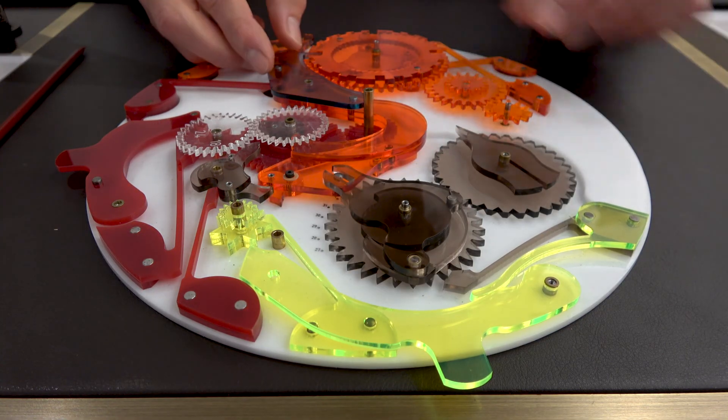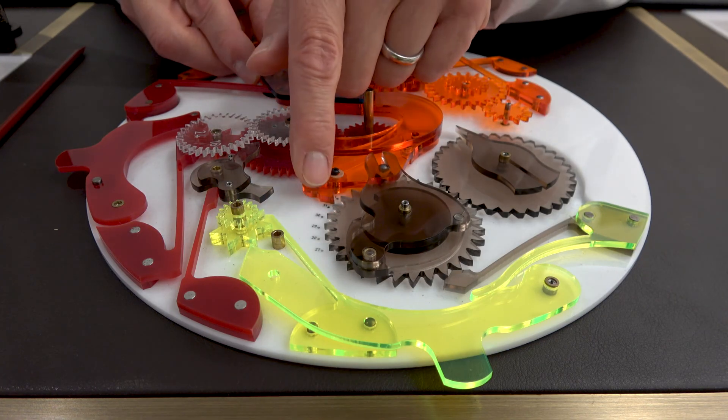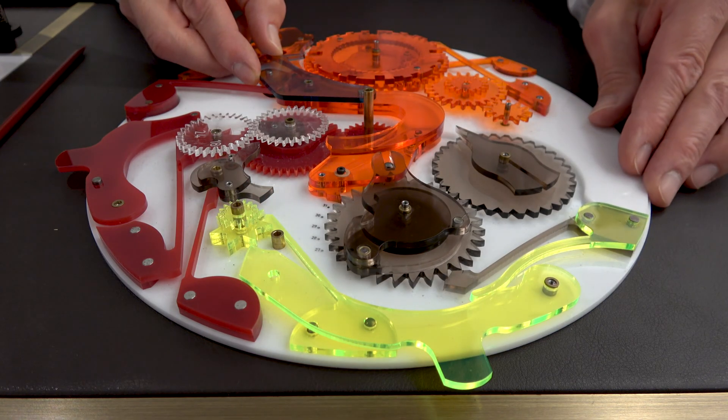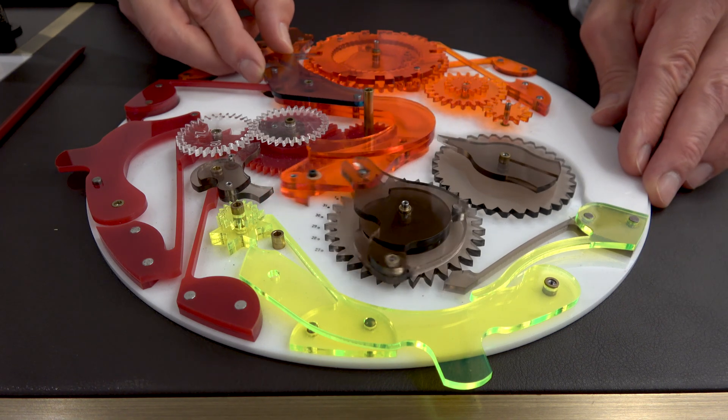So every night at midnight, the great lever will lift off the cam of 48. The click will engage the star of 31 and drive it forward by one day. So this happens every night at midnight.